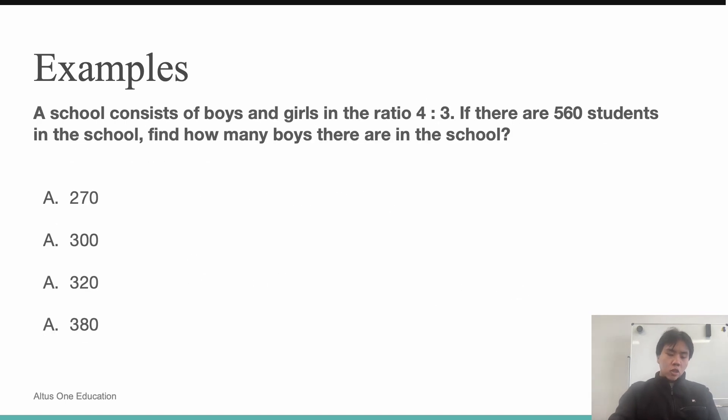Let's have a look at this question. A school consists of boys and girls in the ratio of 4 to 3, so there are four boys for every three girls. If there are 560 students in the school, find how many boys there are in the school. This 4 to 3 ratio, I'm going to treat it as a simplified mini ratio that, when added up with other ratios, adds up to the total number of students.